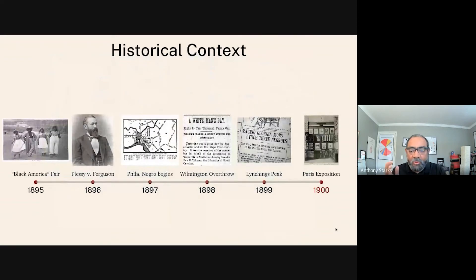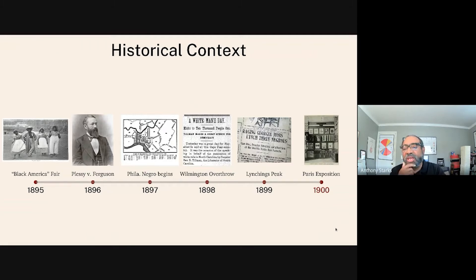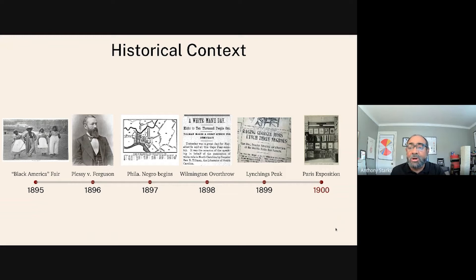Before getting into that, it's very important to give a historical context to what was happening around this time. Let's start in 1895. In the summer of 1895 in a Brooklyn park, there was a cotton plantation complete with 500 Black workers reenacting slavery. This was called Black America in 1895.